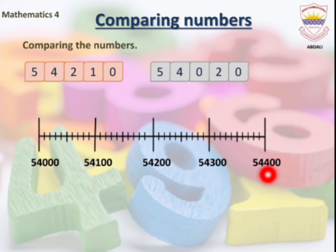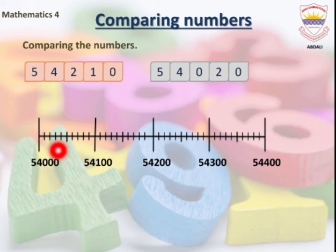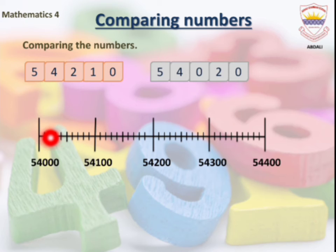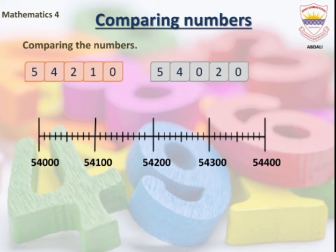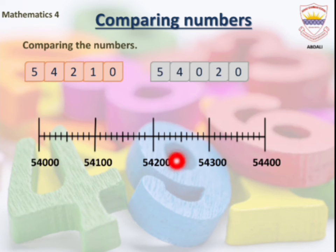We end our number line at 54,400. Each small marking on the number line represents 10. On the number line, we move from smaller to greater.